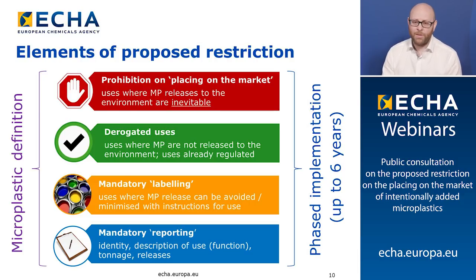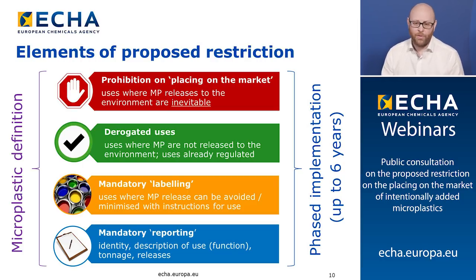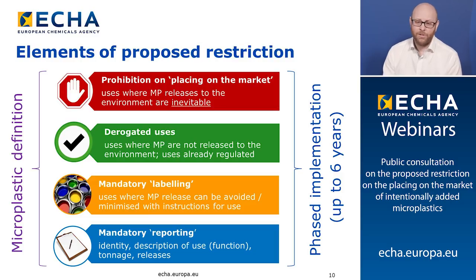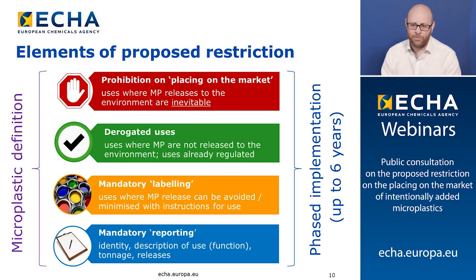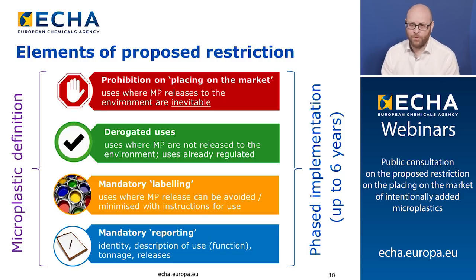The second element comprises derogated uses — a series of derogations where the restriction is not intended to apply, essentially where microplastics are not released to the environment or where a use is already regulated under another piece of European legislation. The third element is mandatory labeling, applying when releases to the environment from microplastic use can be avoided or minimized through additional instructions for use. Alongside this is a requirement for users to report to ECHA. Overarching all of this is the microplastic definition, with different requirements entering into effect for different sectors at different time periods based on socioeconomic considerations.